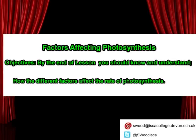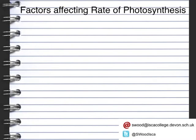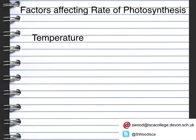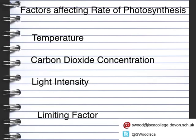Our objectives for today are the factors affecting rate of reaction. By the end of this lesson you should know and understand how the different factors can affect the rate of photosynthesis. There are three things that affect the rate of photosynthesis: temperature, carbon dioxide concentration, and light intensity. All of these are what's known as a limiting factor, which means the amount of them has an effect on the rate of photosynthesis.